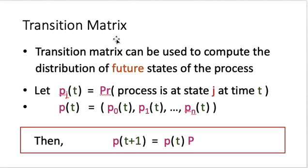Using the one-step transition matrix, we can find the distribution of the future state of the process. We use P_j^{(t)} to represent the probability that the process is at state j at time t, and define a vector P(t) = (P_0^{(t)}, P_1^{(t)}, ..., P_n^{(t)}). If we multiply this vector P(t) by the transition matrix P, we obtain P(t+1). This is easy to verify.